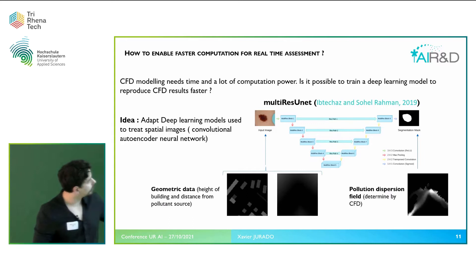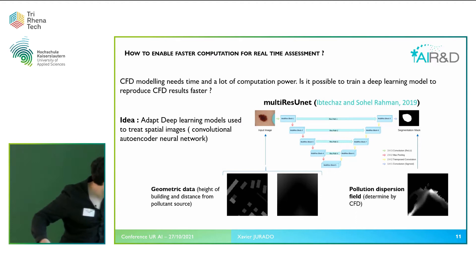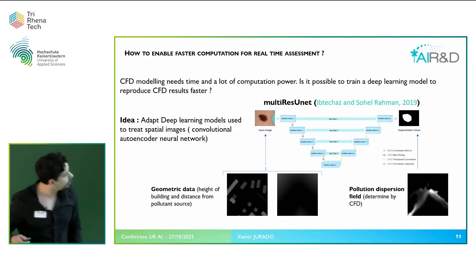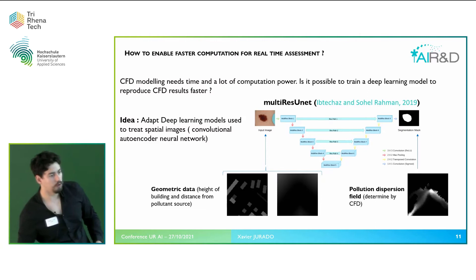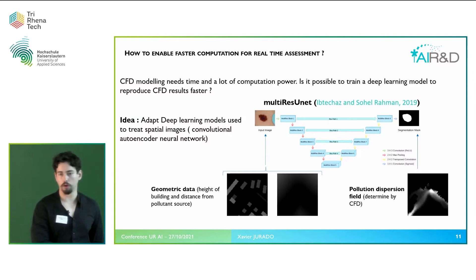What we did with this model is that instead of giving it seven images as was done — since it was originally a model for medical images — we give it the geometric data of the neighborhood. Here we can see it is the height of the buildings seen from the top. Here is the distance from the pollutant source. And the corresponding dispersion pollution is determined by the computational fluid dynamics model.